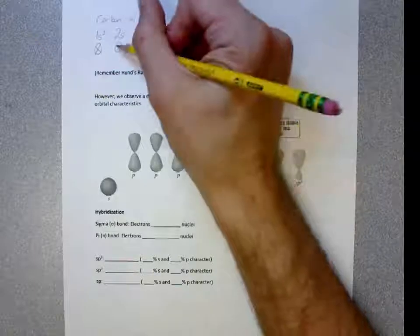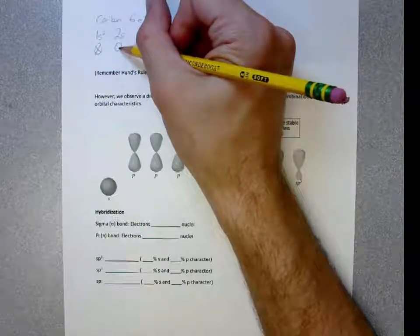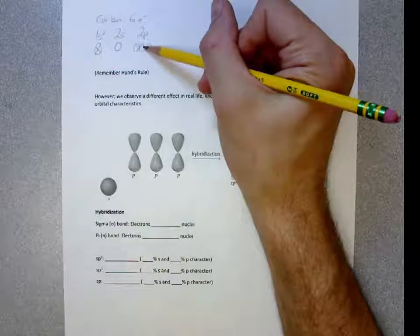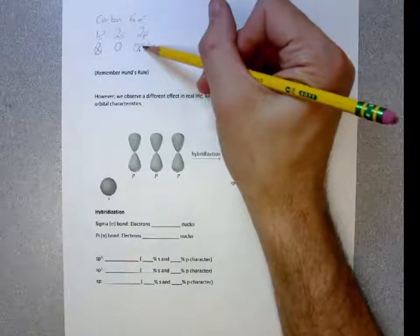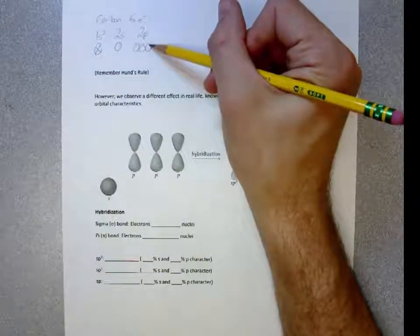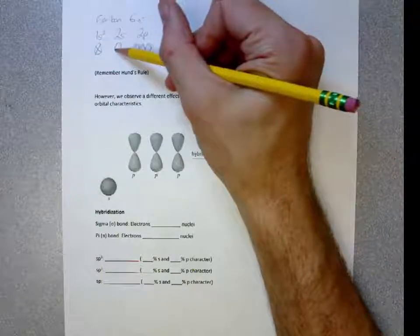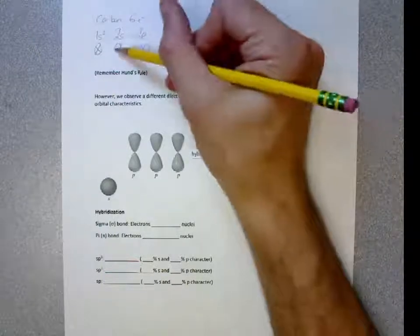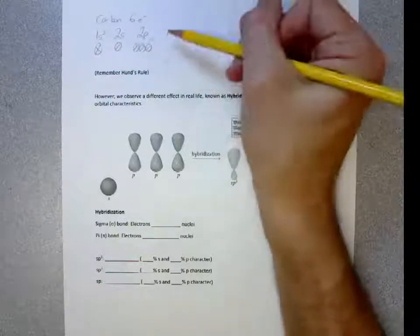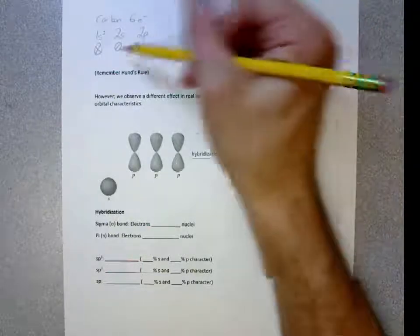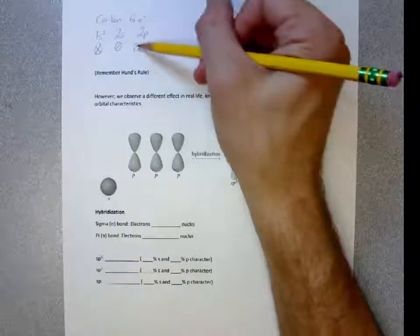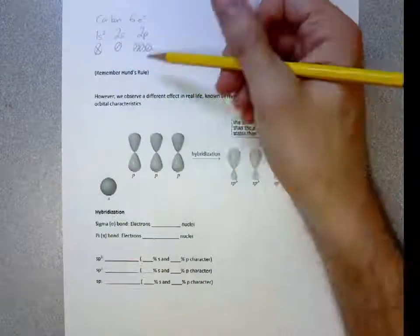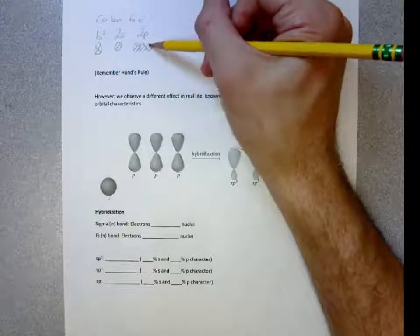Now, we can either do two in the S and then one P here, one P here, and then nothing in this orbital. Or, we can do one here, one here, one here, and one here. The four orbitals half filled because that will be more stable than having this filled and not having that third orbital empty.